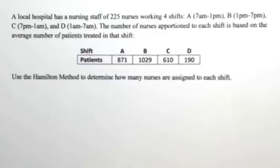A local hospital has a nursing staff of 225 nurses working four shifts. The number of nurses apportioned to each shift is based on the average number of patients treated in that shift. Use the Hamilton method to determine how many nurses are assigned to each shift.